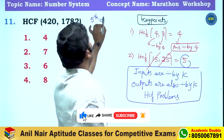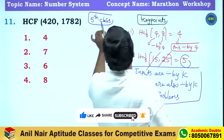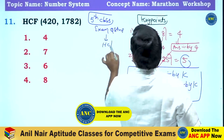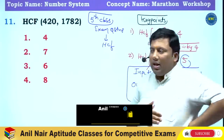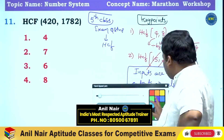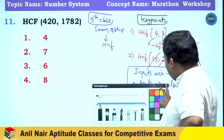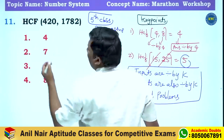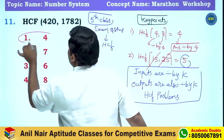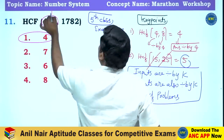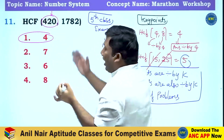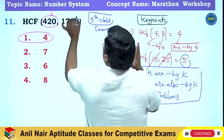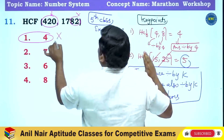I will solve original exam questions from HCF — a lot of students find these very difficult, but they are actually very easy. First question: HCF of 420 and 1782. Check option: is it divisible by 4? 420 is divisible by 4, but all input numbers must be divisible by 4. 1782 is not divisible by 4, so 4 cannot be the answer.